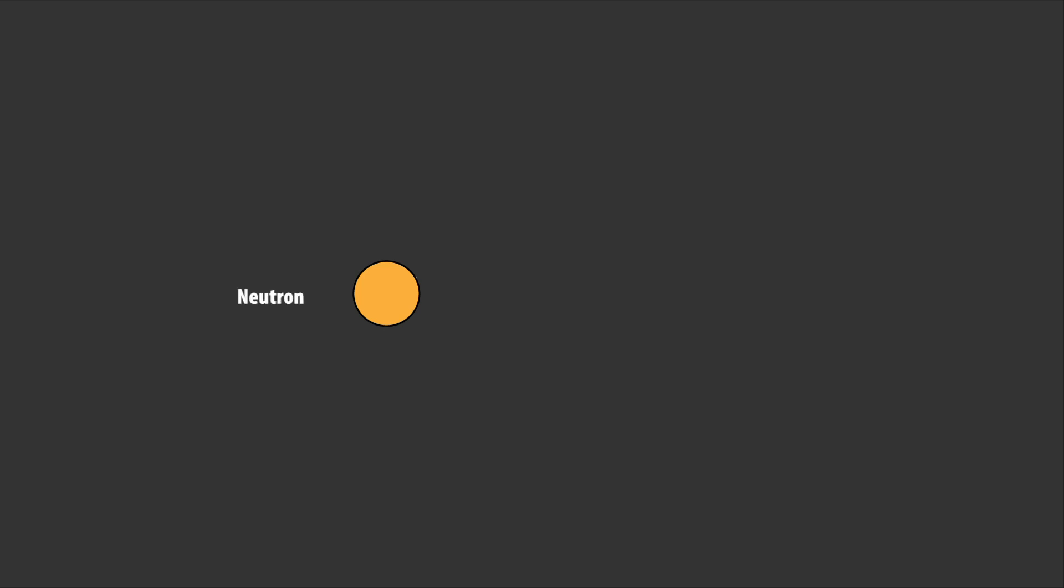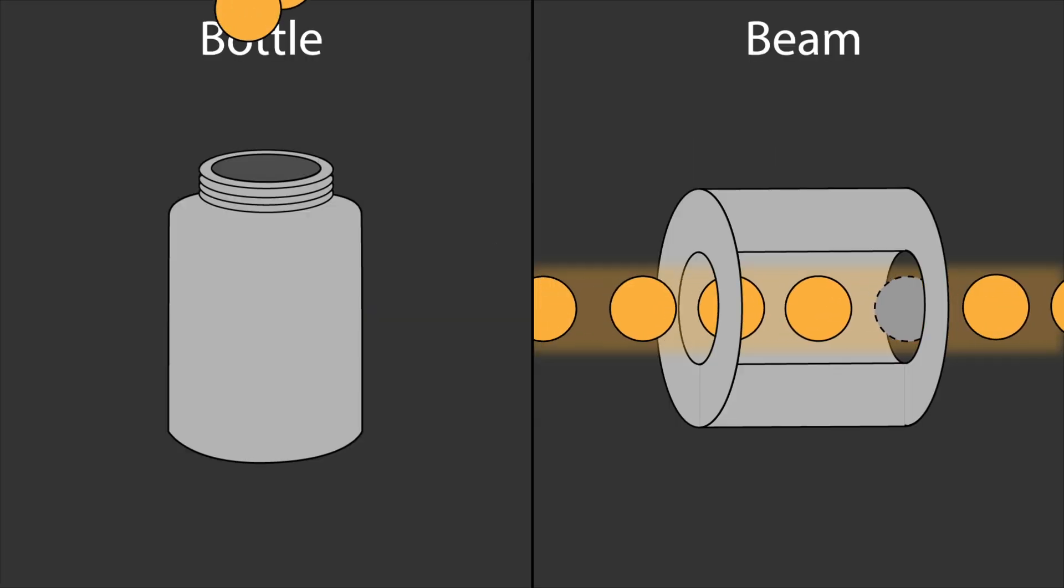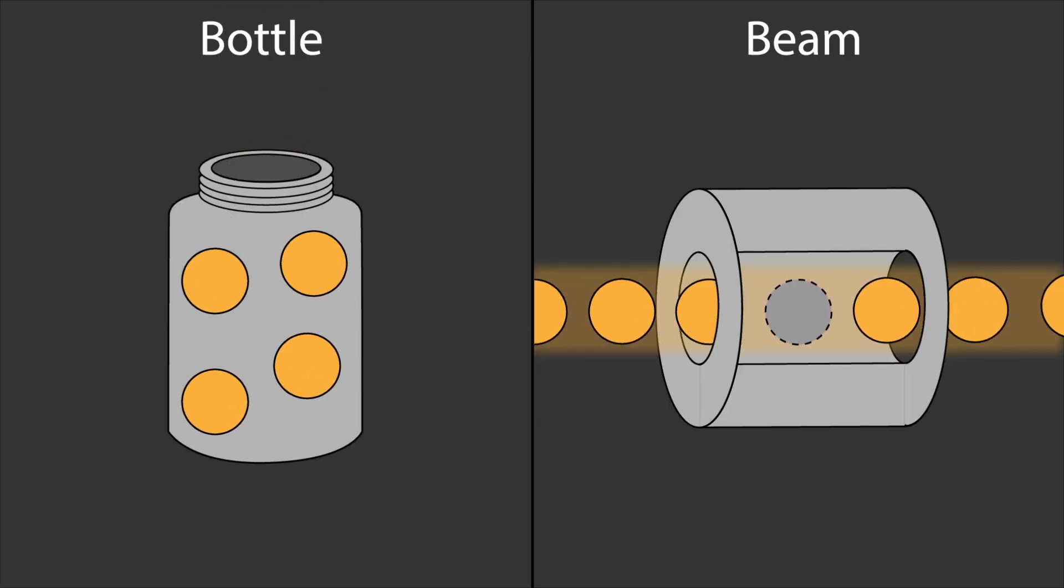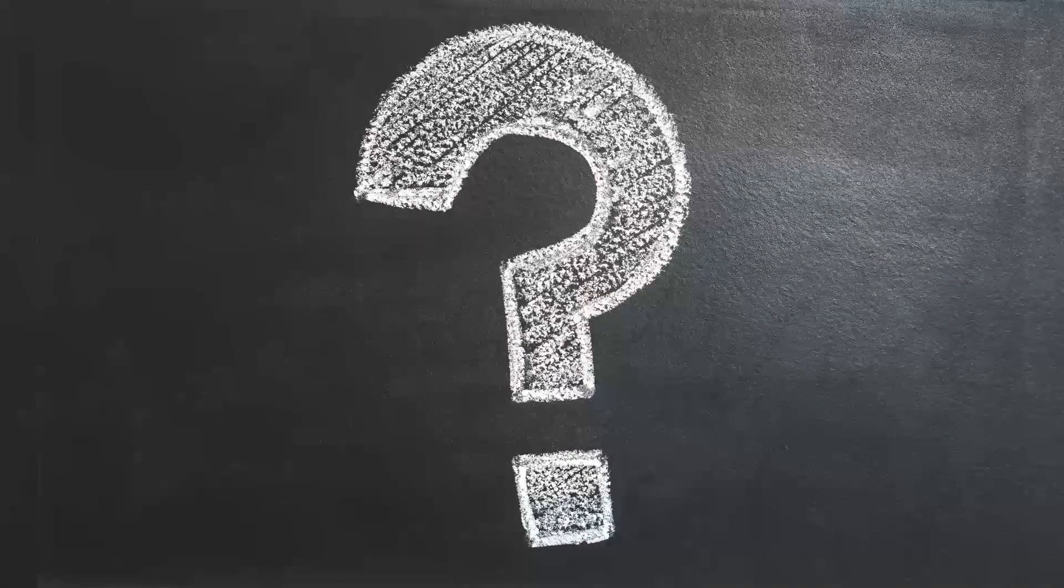When neutrons are left to their own devices, they decay, and relatively quickly. We can measure this decay, but different measurement techniques give different times. This brings into question our understanding of how and why neutrons decay.